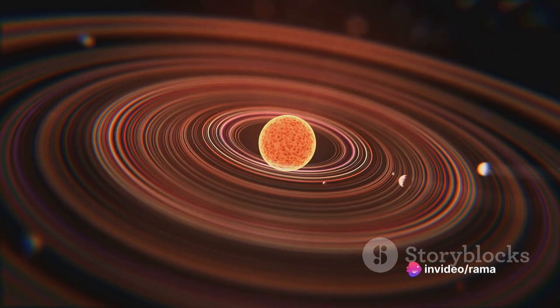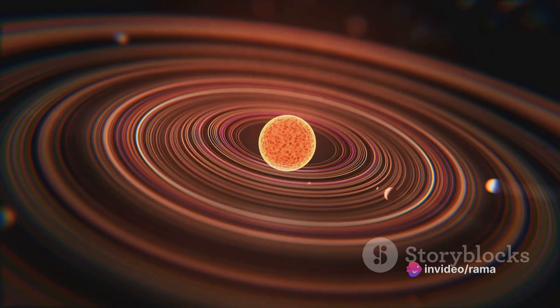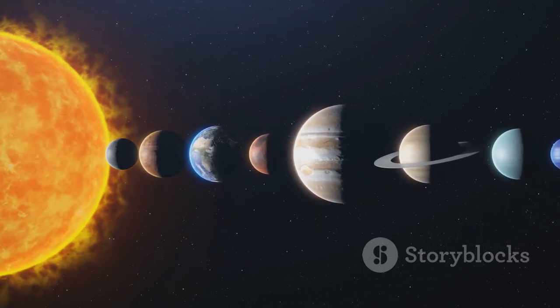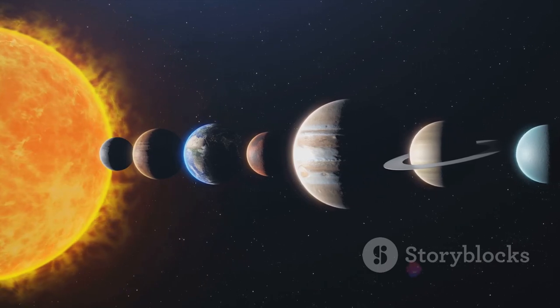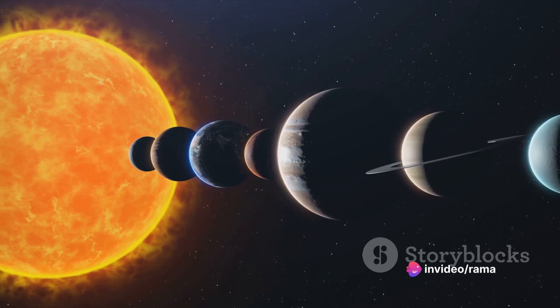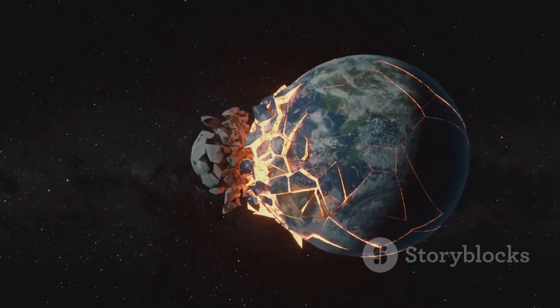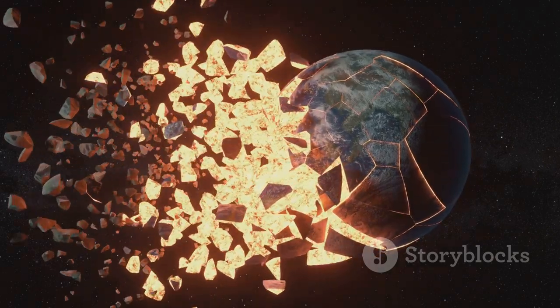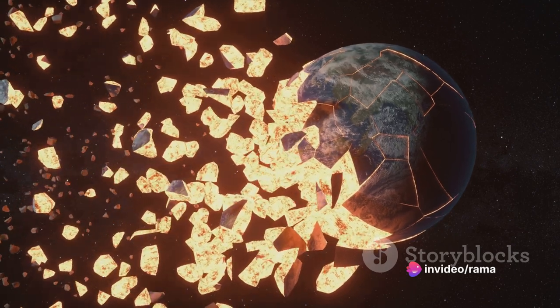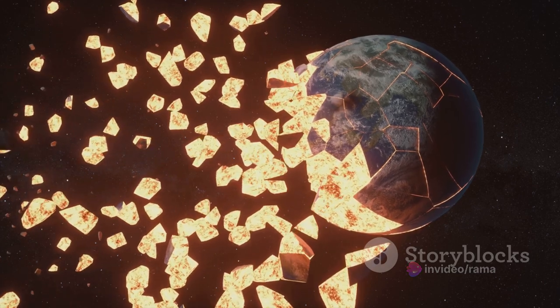In one such nebula around 4.6 billion years ago, our very own star the sun came into being. But the story doesn't end there. Alongside the formation of the sun, the remaining gas and dust began to coalesce into a flat spinning disk. Within this disk, particles started to stick together, forming larger and larger clumps until they became planetesimals, the building blocks of planets. Over time, these planetesimals collided and merged, forming protoplanets. And as these protoplanets cleared their orbit of debris, they became the planets we know today. Our Earth was one such planet, forming from the debris in the sun's orbit.